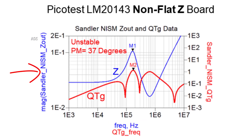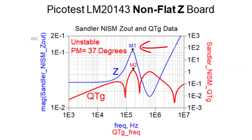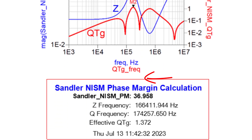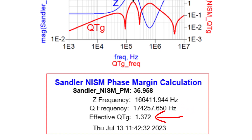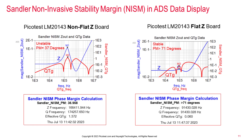The ADS NISM data plots show the impedance data on the left axis as well as the calculated QTG parameter on the right axis. Marker M1 is placed on the impedance peak and marker M2 is placed on the QTG peak. The calculation display shows the calculated NISM phase margin, the frequency of each marker, and the effective QTG magnitude from marker M1. This works the same as it does on a network analyzer, but in ADS it can be used on both measured and simulated impedance results.